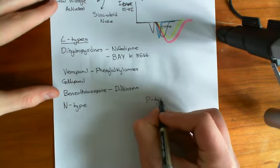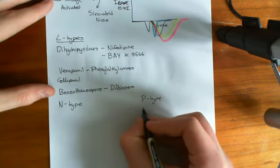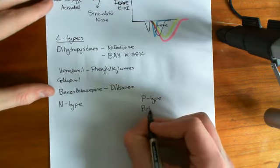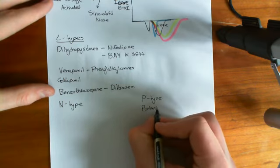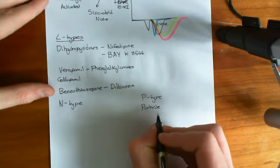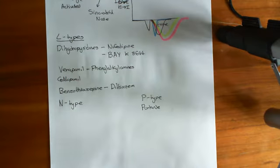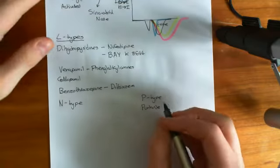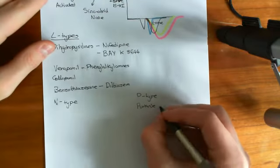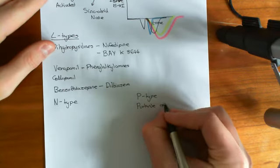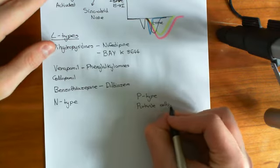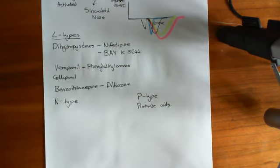The reason it was called P-type was that it was found in the Purkinje cells of the cerebellum. The Purkinje cells are an extremely important cell in the cerebellum — they are absolutely massive if you see them histologically. They sit in the sagittal plane of the cerebellum and are very important in the motor system.